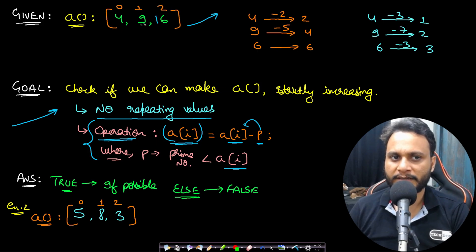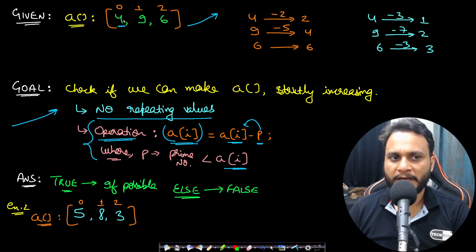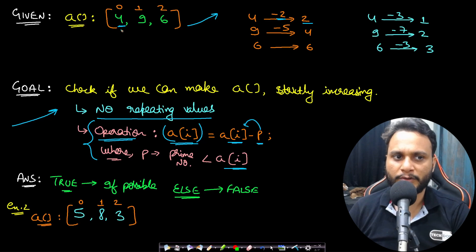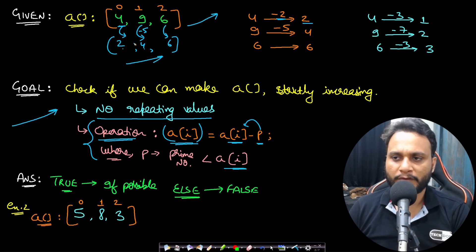If it was already strictly increasing like [4, 9, 16] then we would not need to apply any operation. But in this case it is not strictly increasing. Can we make it so? For the first value 4, if we take the prime number 2 (which is less than 4) and subtract it, we reduce 4 to 2. Similarly, 9 can be reduced to 4 by subtracting 5 (a prime less than 9), and 6 can be left as is. So we get [2, 4, 6] which is strictly increasing — one valid configuration.